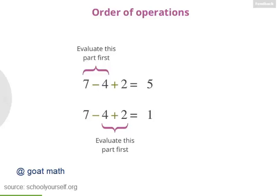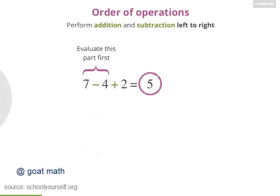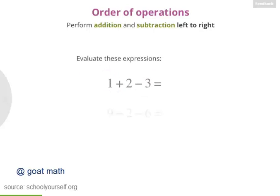It turns out the answer here is 5, not 1. And that's because Order of Operations says to perform addition and subtraction from left to right. So you should first perform this subtraction and then perform this addition. Let's see a few more examples.